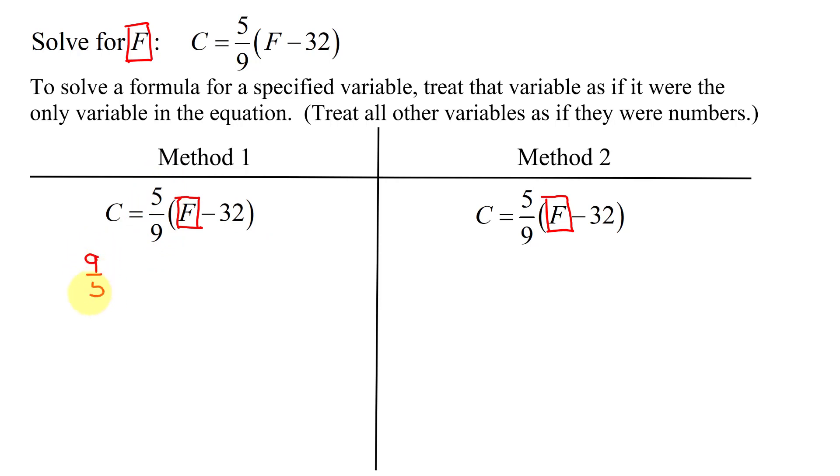So I'm going to get 9 fifths times C equals, multiplying the other side by 9 fifths, I get 9 fifths times 5 ninths times the quantity F minus 32.